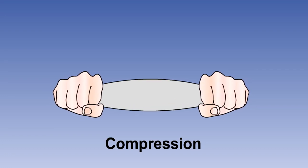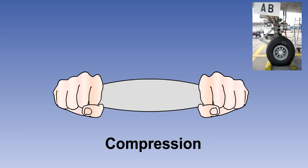Compressive loads are the opposite of tensile loads and tend to shorten structural members. Members subject to compressive loads are said to be under compression. Components designed to resist compressive loads are known as struts. You will find numerous examples of struts in an aircraft landing gear, the primary one being the oleo-pneumatic strut which takes the compressive loads on landing. This will be fully explained in the landing gear lesson.